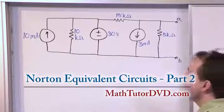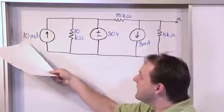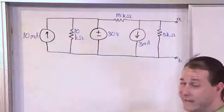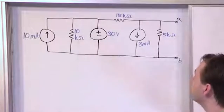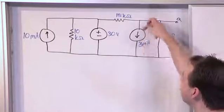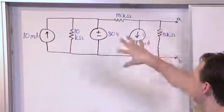It's a little more complicated. We've got a 10 milliamp source. So these are milliamps, we've got to be careful about that. 10 milliamp source going up, 30 volt source there, we have a 3 milliamp source going down, and then we have resistors everywhere.